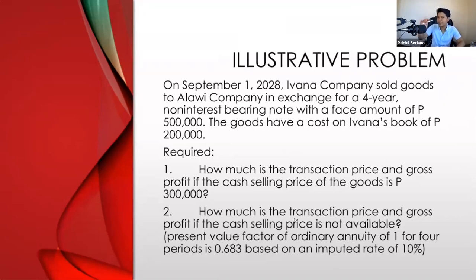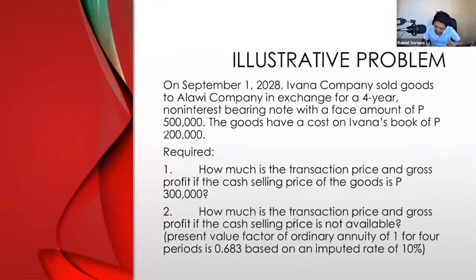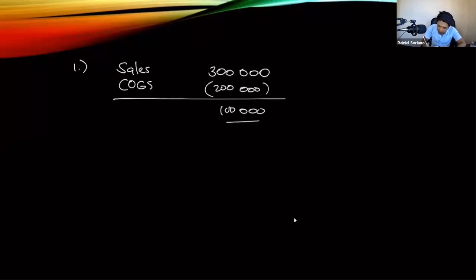Since the cash selling price — which is the cash price equivalent — is available at 300,000 pesos, the transaction price (revenue) is 300,000. Gross profit equals revenue minus cost of goods sold: 300,000 − 200,000 = 100,000 pesos. Requirement 1 answers: transaction price = 300,000 and gross profit = 100,000 pesos.